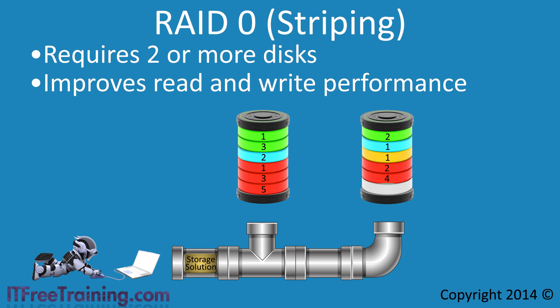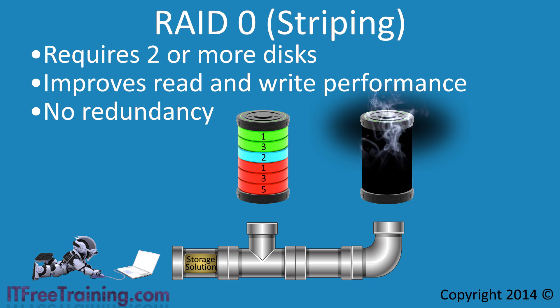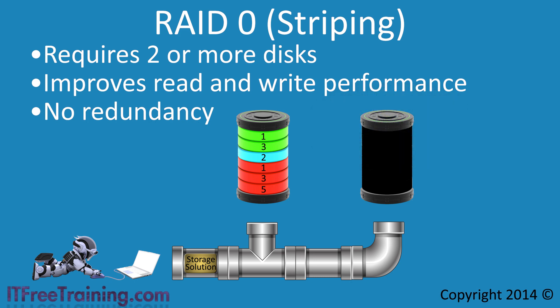The downside of RAID 0 is that it has no redundancy. If one drive were to fail, you would lose all your data. If the second drive fails, the first drive only has approximately half the file information, making it not useful without the other. To remember RAID 0, I like to remember that RAID 0 offers zero redundancy. The other RAID levels I will look at do offer redundancy in some form.